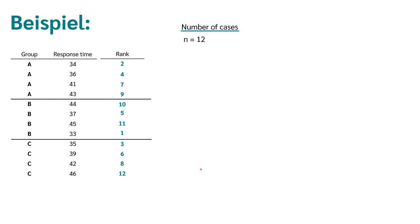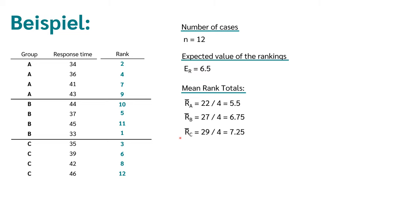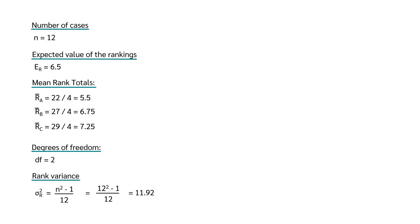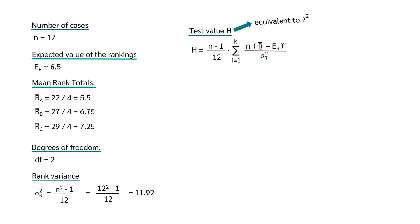We have a number of cases of 12, an expected value of the ranks of 6.5, and the calculated mean rank sums for each group. The degrees of freedom are 2, given by the number of groups minus 1 (3 − 1). The variance of ranks is given by (n² − 1) ÷ 12; with n = 12, we get a variance of 11.92. With these values, we can calculate the test statistic H. The test statistic H corresponds to the chi-square value and uses the formula where n is the number of cases, r̄ is the mean rank sum of the individual groups, ER is the expected value of the ranks, and σ² is the variance of the ranks.